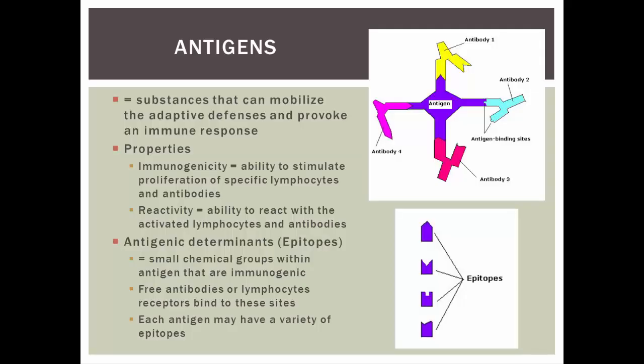Let's start with antigens. An antigen is defined as a substance that can mobilize adaptive defenses and provoke an immune response — basically anything that comes into our bodies that our immune system reacts to. It has what's called immunogenicity: its ability to stimulate proliferation of specific lymphocytes and antibodies. Our immune system reacts to it, so we have immunogenicity. It also has reactivity.